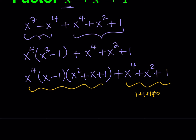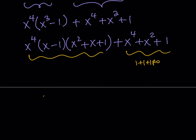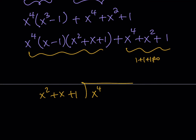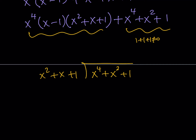That means the common factor has to be x squared plus x plus 1. In other words, x to the 4th plus x squared plus 1 is divisible by x squared plus x plus 1. If you don't know what the other factor is, you could do long division — divide x squared plus x plus 1 into x to the 4th plus x squared plus 1 — and the quotient will be the other factor. I'm going to leave that as an exercise and proceed with my method.